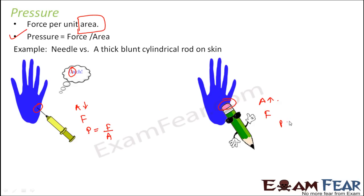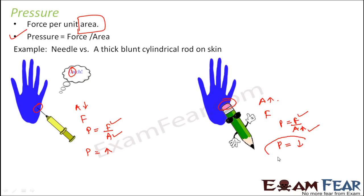Pressure equals force divided by area in both cases. Force is the same in both, but the area is less for the needle and more for the rod. Since pressure is inversely proportional to area, when area is less the pressure is more, and when area is more the pressure is less. Since the pressure exerted by the pencil or thick cylindrical rod is less, the pain felt is also less. But in the needle case, pressure is more and therefore the impact is also more.